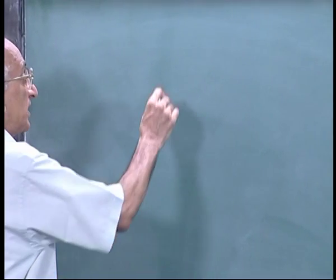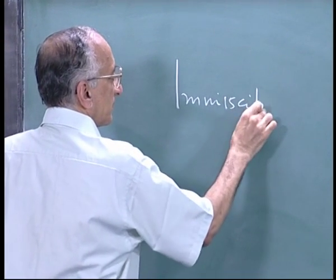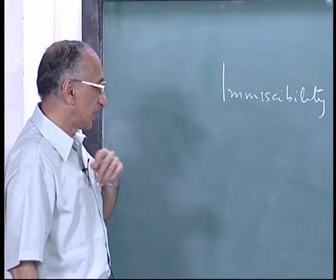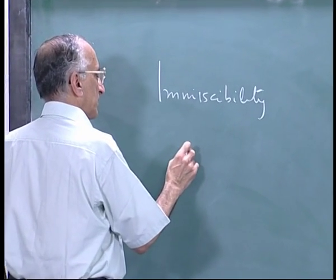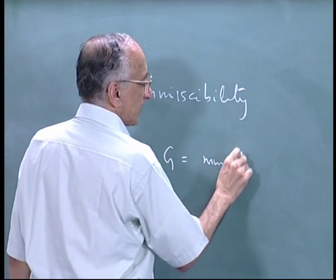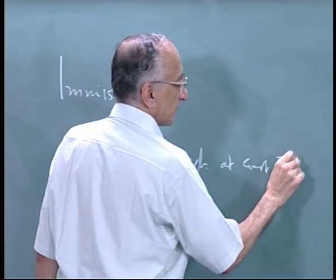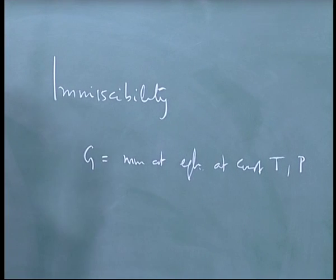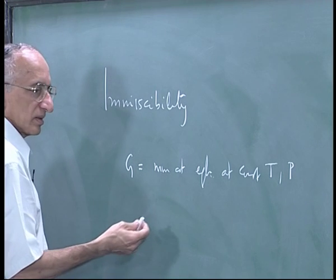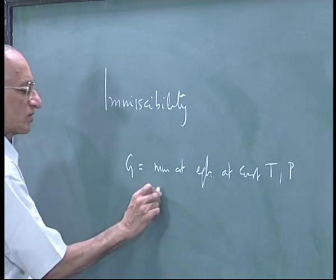Let us get started. I am going to discuss immiscibility. The basic idea is that the Gibbs free energy equilibrium criterion is that G is a minimum at equilibrium. This is a general thermodynamic result: at constant T and P, G should be a minimum for a closed system.